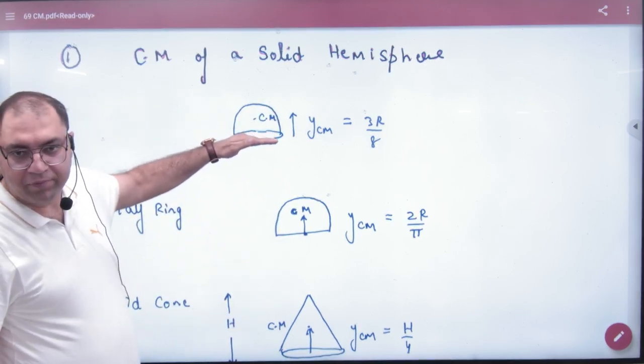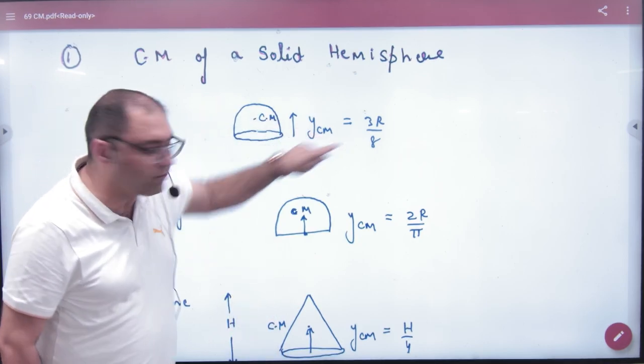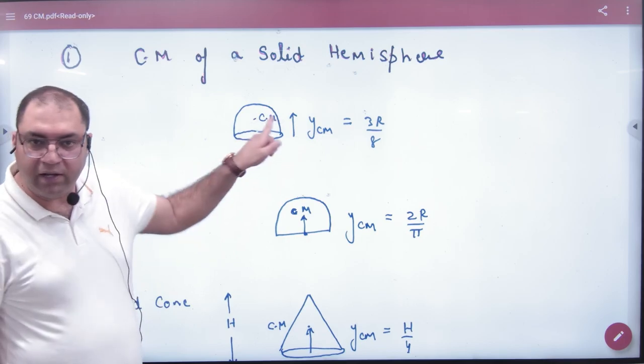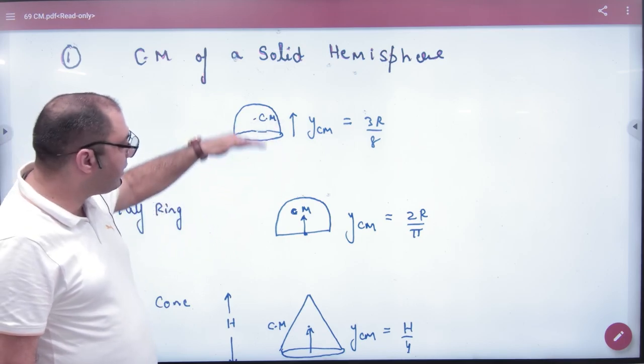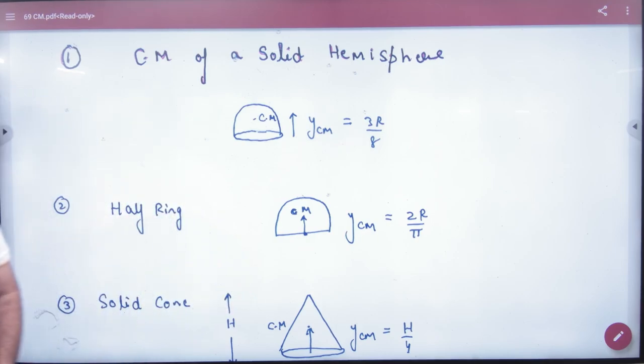If this is a hemisphere, the hemisphere is placed, then what is the center of mass height? 3r by 8. So first, write the formula - the diagram of the hemisphere, the center of mass height 3r by 8. r is the radius of the hemisphere.